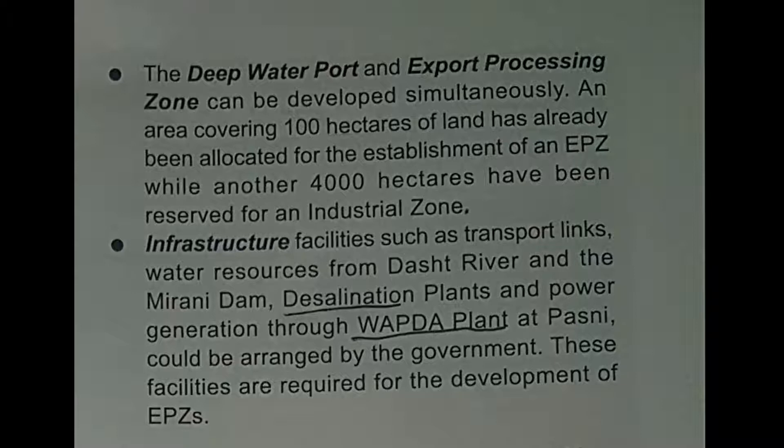Number four: infrastructure facilities such as transport links, water sources from the Dasht River and the Mirani Dam, desalination plants, and power generation through a WAPDA plant at Pasni could be arranged by the government. These facilities are required for the development of EPZs. If the government is going to develop EPZs on the seaport, infrastructure facilities including transport links, water resources, and desalination plants are also required.